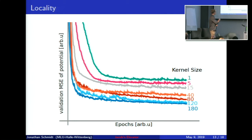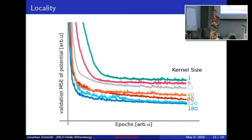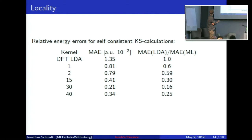Looking at some first results: this is a simple training curve with the number of epochs on one axis and the mean squared error for the potential on the other. As expected, with increasing non-locality — meaning more density points fed into the neural network — we get better results, although at some point we see diminishing returns. The total system size in these cases was 200 points, and a kernel size of 180 didn't really help any further.